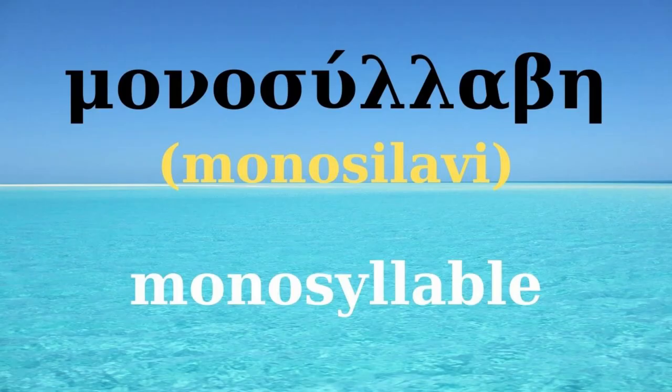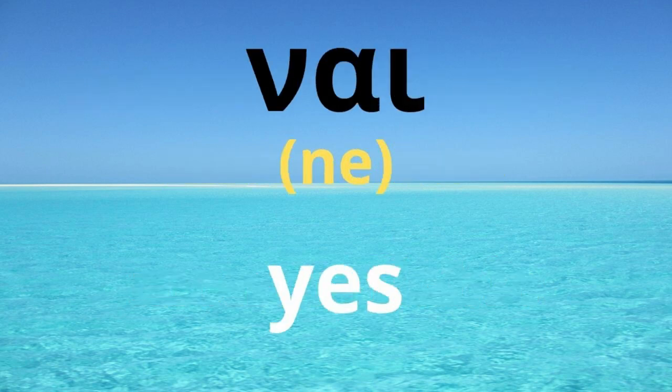Depending on the number of syllables, a word is called MONOSYLABY — that is when it has one syllable. Take, for example, the word NE. It means 'yes.' It has a consonant, the letter NY, and a diphthong, ALFA-YOTA. NE.